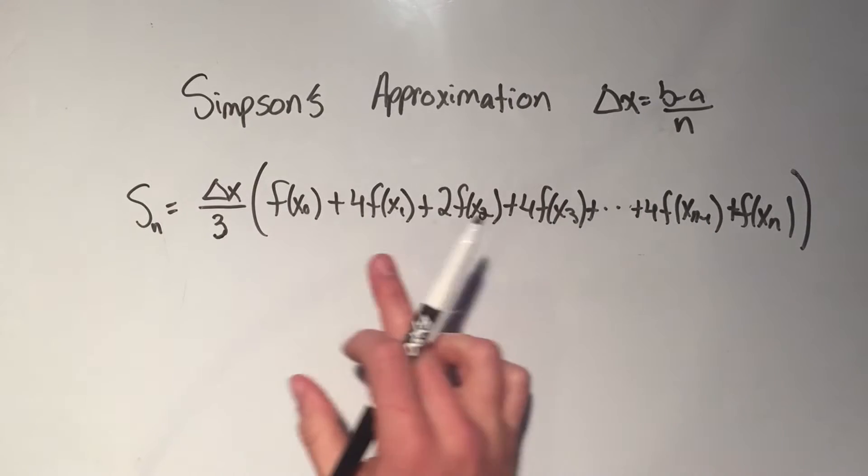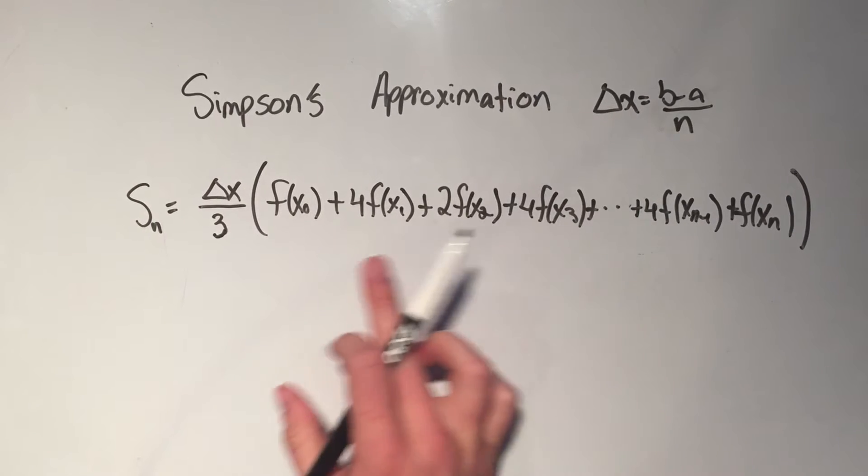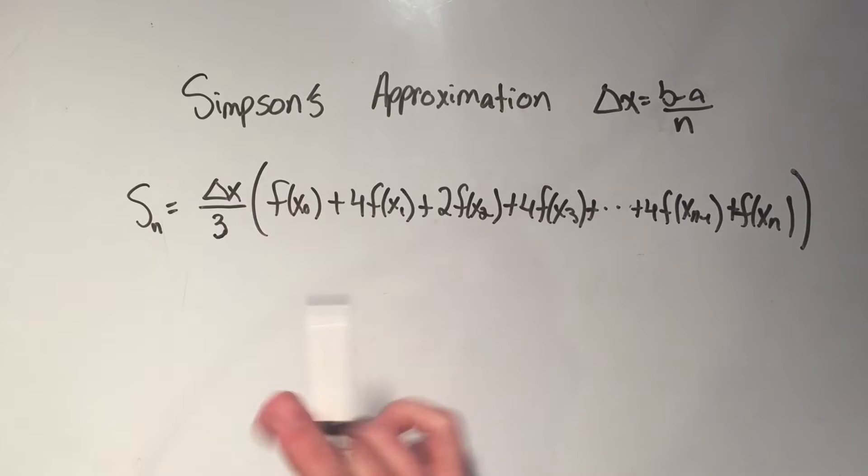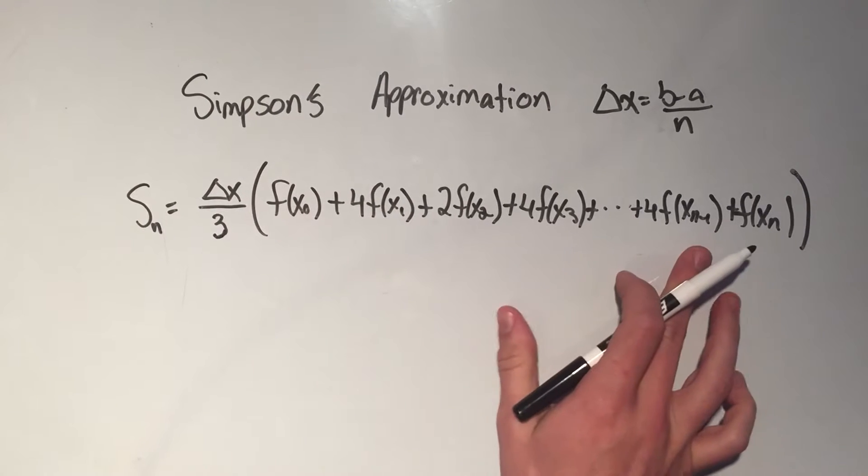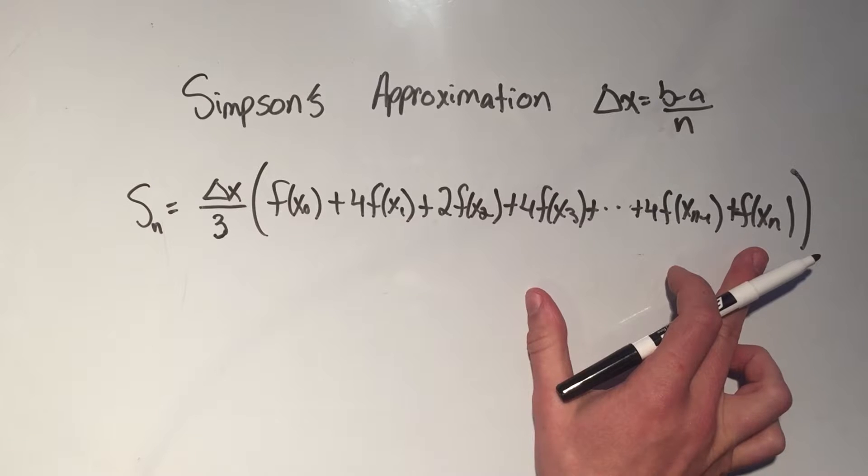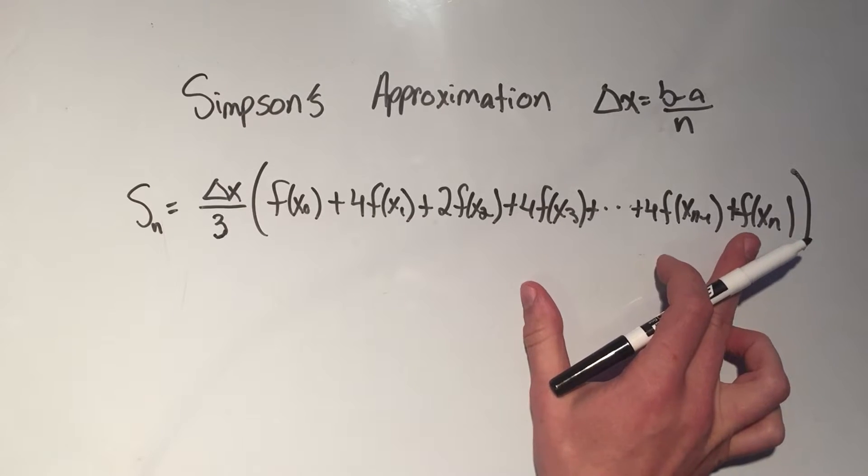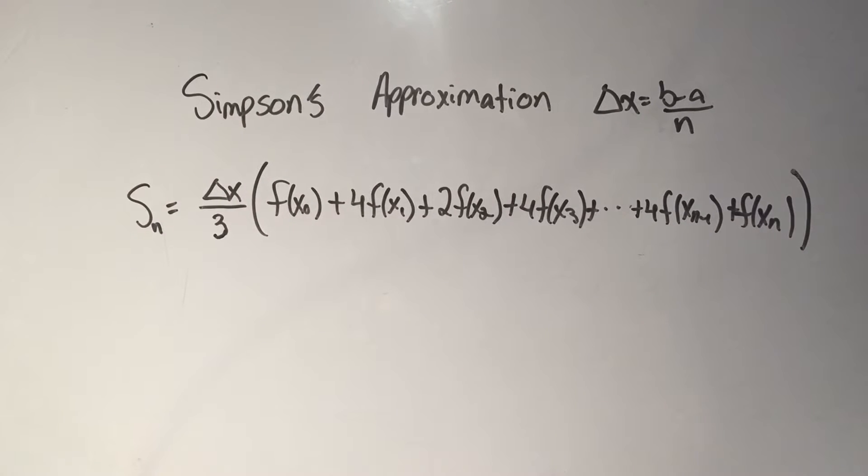So all the middle terms in here switch between 4s and 2s. In the trapezoid rule, they were all just 2s, and up until the very end, the very last point, f of xn, that gets a 1 in front of it, just like the trapezoid rule.